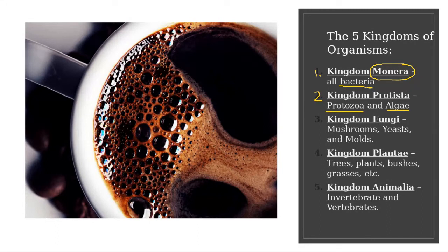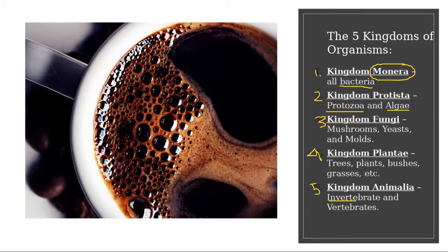The third kingdom is kingdom Fungi, which includes mushrooms, yeast, and molds. The fourth kingdom is kingdom Plantae, which includes all trees, plants, bushes, grasses, etc. And the last kingdom is kingdom Animalia, which includes all animals — whether invertebrate or vertebrate, whether they have a backbone or no backbone — all are included in kingdom Animalia.